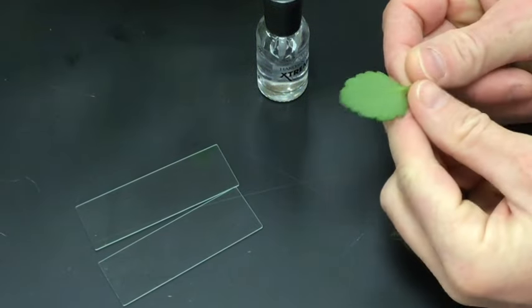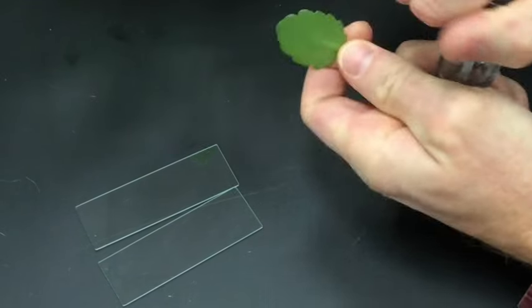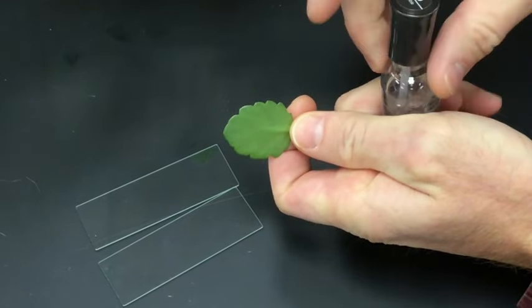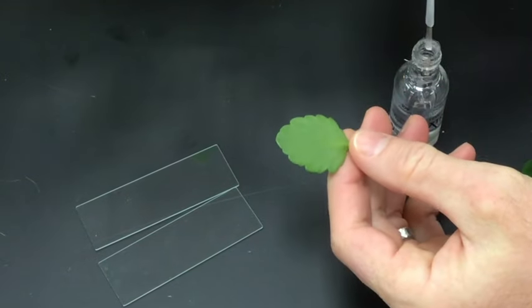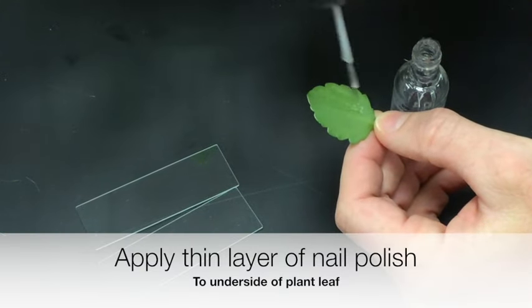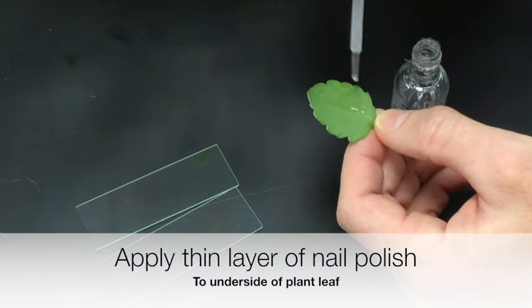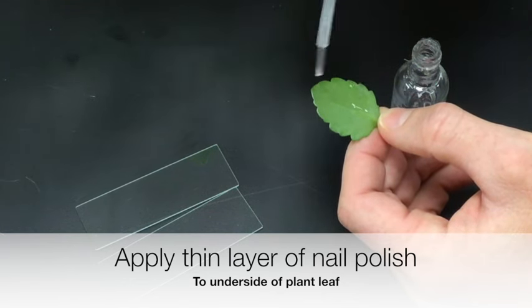Okay, so I'll take the succulent plant first, grab the nail polish. What I want to do is paint a really thin layer, avoiding the veins. There aren't a lot of veins on the succulent, so I'm just going to paint it along one side here, making sure that it's not a very thick layer.